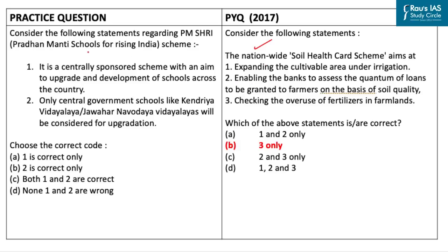The practice question says: consider the following statements regarding the PM Shri scheme. The first statement is that it is a centrally sponsored scheme with an aim to upgrade and develop schools across the country. This statement is correct, as the PM Shri scheme aims to upgrade and develop more than 14,500 schools across the country.